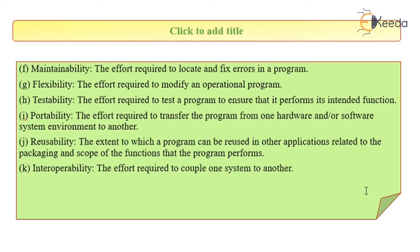Maintainability: the effort required to locate and fix errors in the program. Every system is prone to errors, maybe after sales or after its warranty period. In such cases, it should always be able to fix such kinds of errors. No system will remain error-free, but it should be able to track the errors and maintain them with ease.